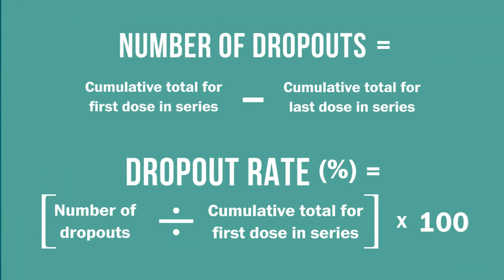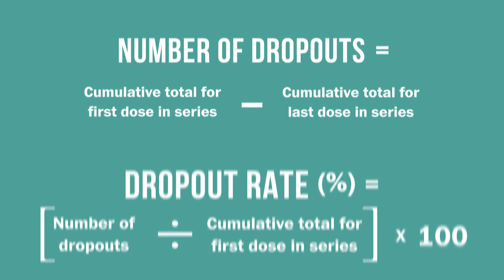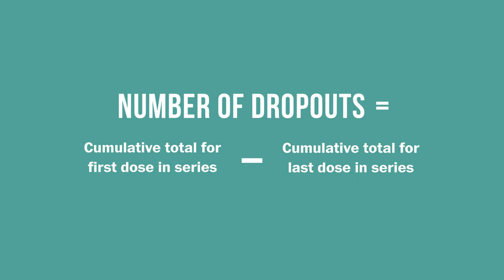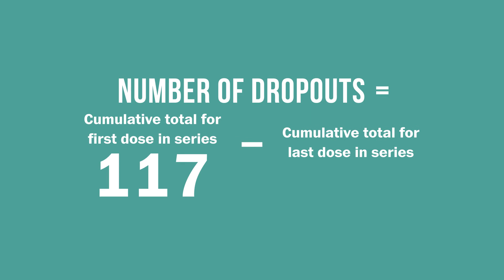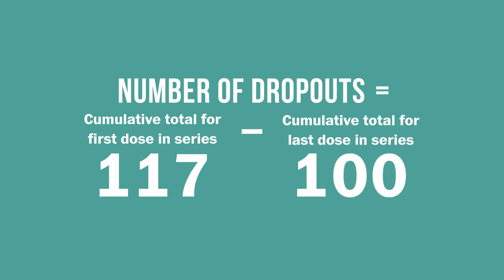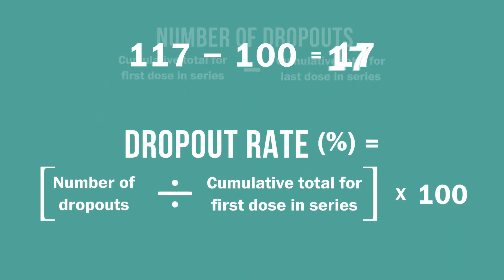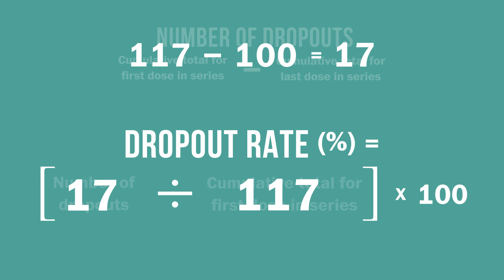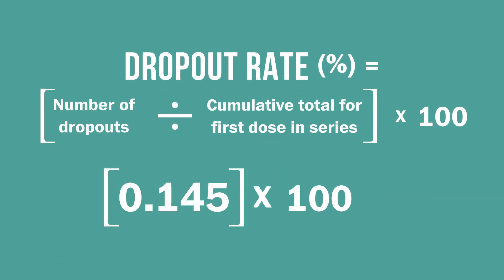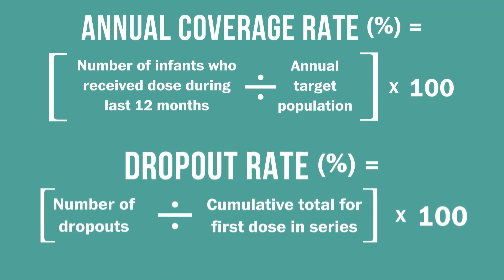This is the formula we will be using. First, calculate the number of dropouts for a particular vaccine series. For example, let us say that 117 infants in the target population received pentavalent 1 over the past 12 months, but only 100 received pentavalent 3. The number of dropouts is 117 minus 100, or 17. Now we take the number of dropouts, 17, and divide it by the number of infants who did receive the first dose over the previous 12 months. 17 divided by 117 is 0.145. Multiply 0.145 by 100 and the result is the dropout rate.